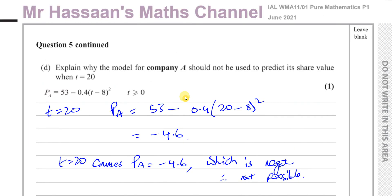That completes question number 5 from P1, June 2021. Other questions from this paper can be found by clicking the link here. Other questions from this topic of quadratics and graphs, and from other papers including P1, P2, P3, P4, M1, S1, and IG papers can be found via the link in the description. Subscribe to the channel by clicking this link. Thank you for watching, see you soon.